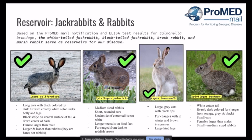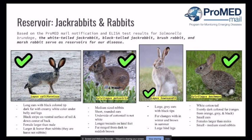Now we have the last reservoir: Sylvilagus bachmani. They also have a white cottontail, and unlike the other rabbit, they have a white underside. They are evenly dark in their fur and usually range from orange, gray, and black in color. They have small ears, and the females are usually larger than the males.